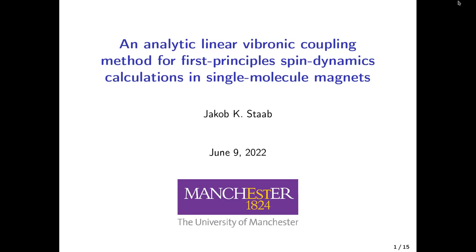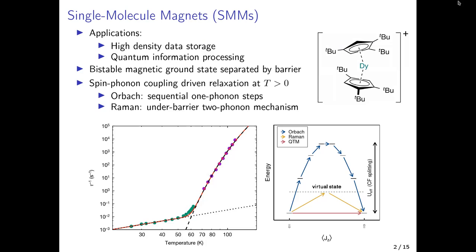A quick introduction to single molecule magnets. They are molecules like the one shown on the right, and they have applications in high-density data storage and quantum information processing, which makes them a very interesting research subject. They work because they have an electronic structure with a bi-stable ground state which is separated by an energy barrier, inhibiting relaxation — that is, going from a spin-down state to a spin-up state.